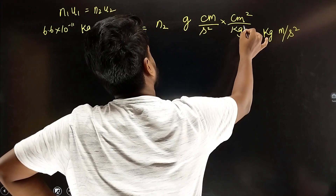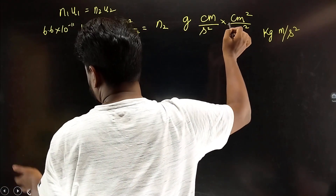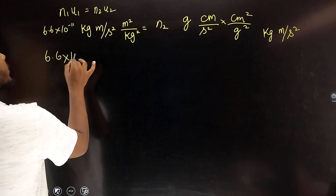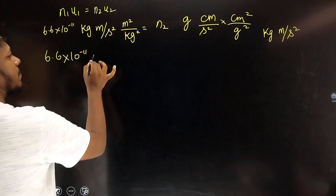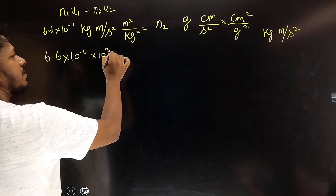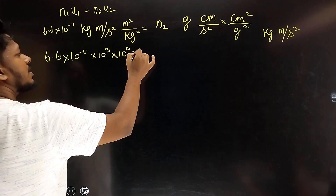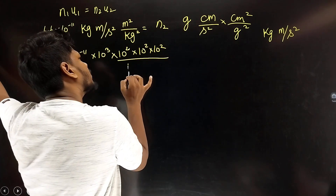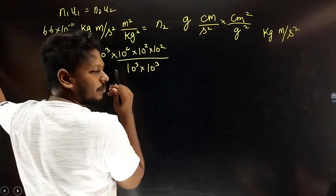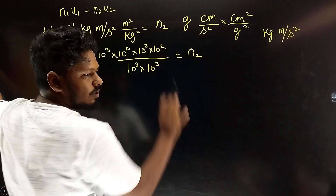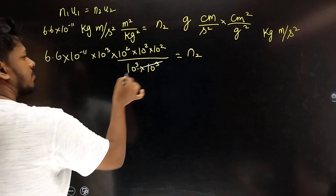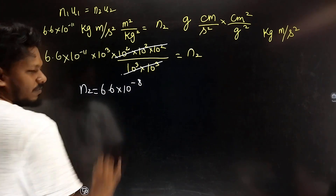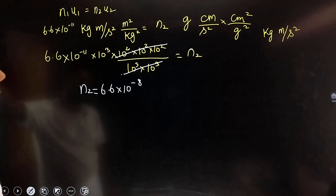Let's simplify: 6.6 into 10 power minus 11, kilogram to gram is 10 power 3, meter to centimeter is 10 power 2, so meter squared to centimeter squared is 10 power 4. The unit powers cancel out — 10 power 6 cancels with 10 power 6 — giving n2 value 6.6 into 10 to the power of minus 8. So this is the answer. Thank you.